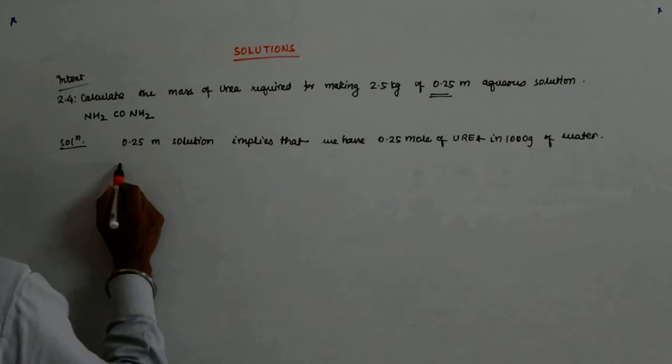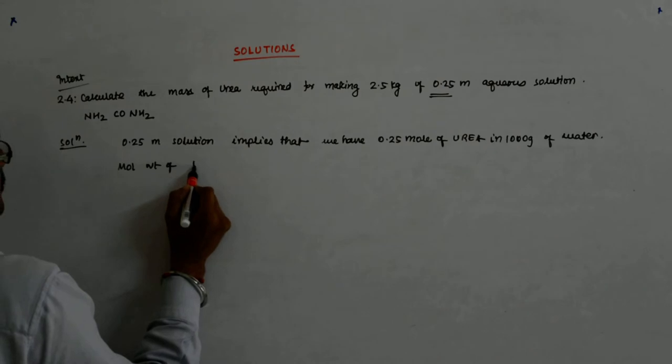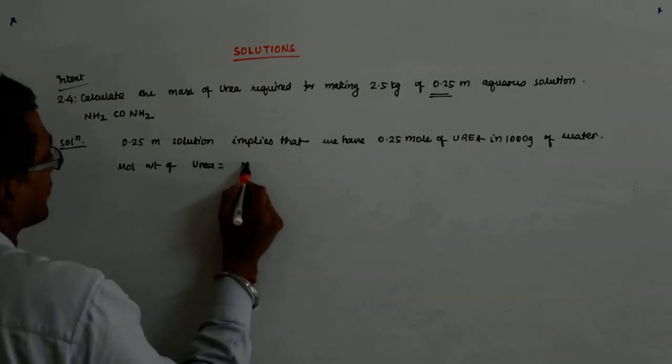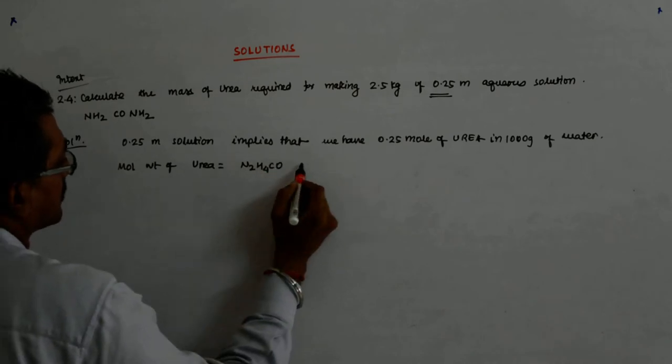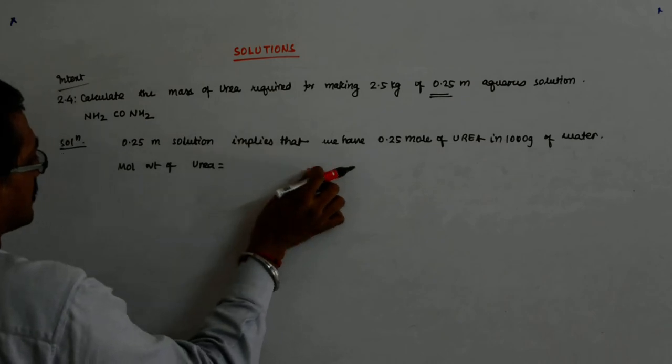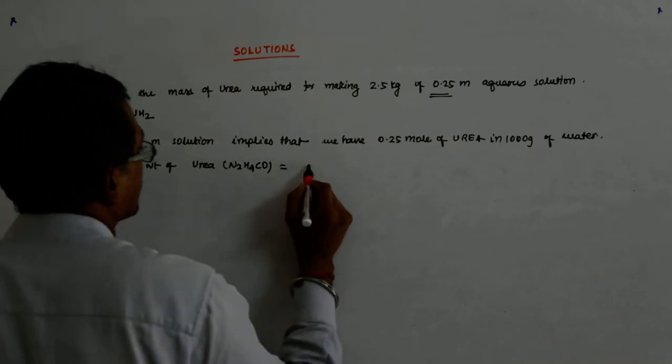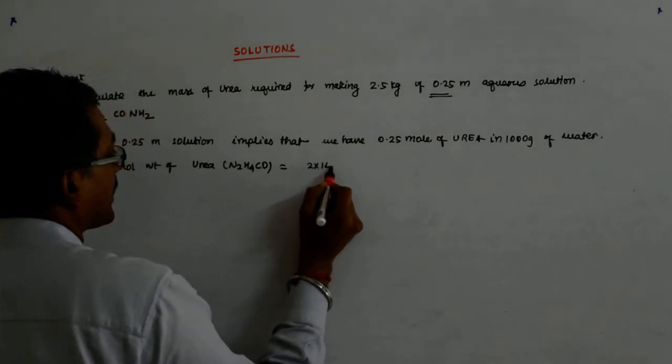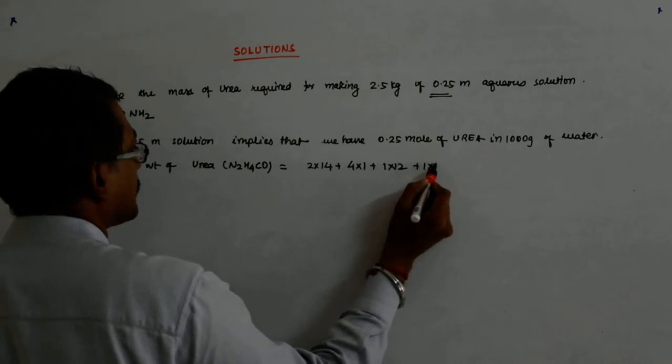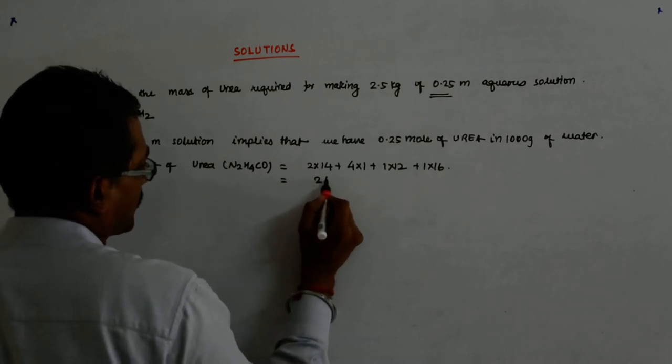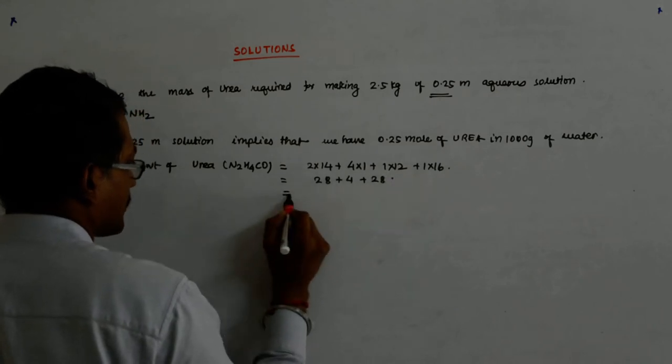Now what is the molecular weight of urea? That is N2H4CO. That is equal to 2 into 14 plus 4 into 1 plus 1 into 12 plus 1 into 16. That gives me 28 plus 4, 12 and 16 is 28. So that is equal to 60.